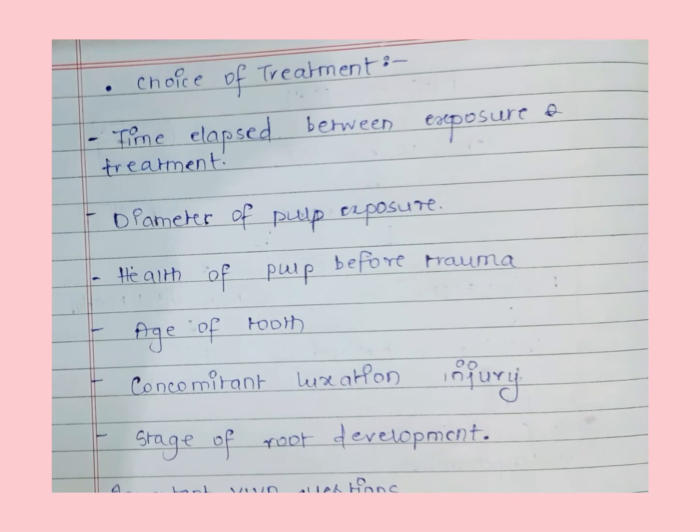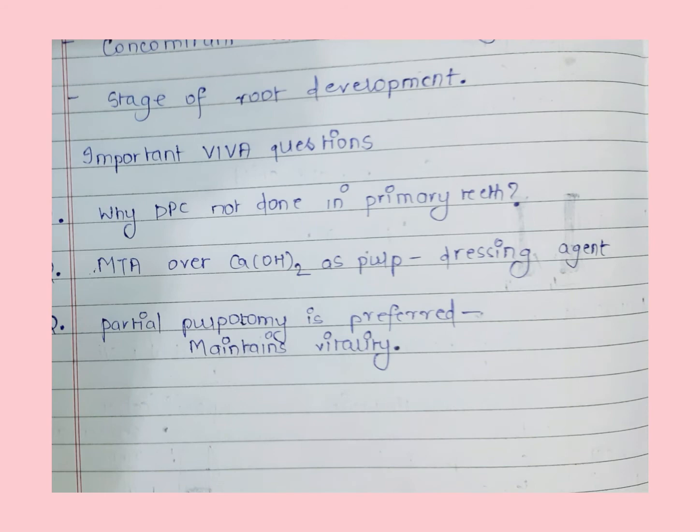There are other important viva questions. One is: why do we prefer MTA over calcium hydroxide as our pulp dressing agent? Because with MTA we do not require complete removal of blood prior to placement — a little moisture from the blood actually helps in curing the material.